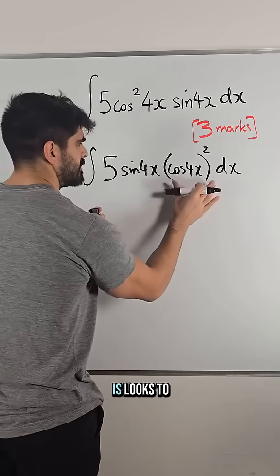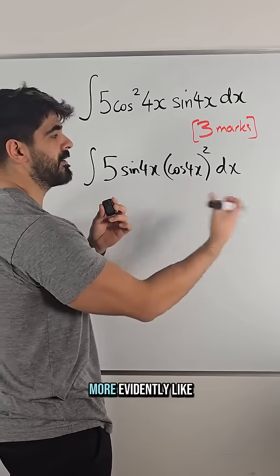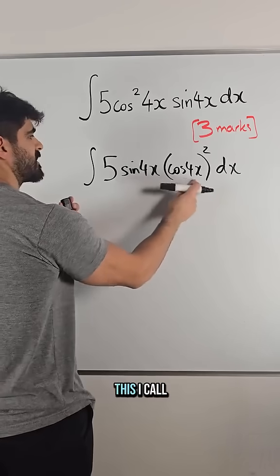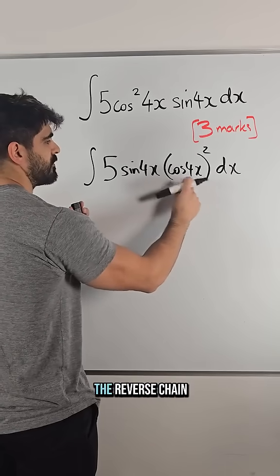Now this looks to me more evidently like a power function, or I call it a pavan function. This I call the angle, so we're going to do the reverse chain rule.